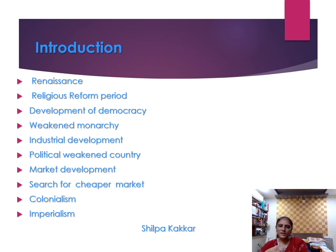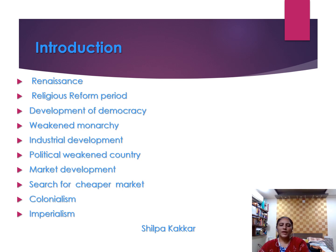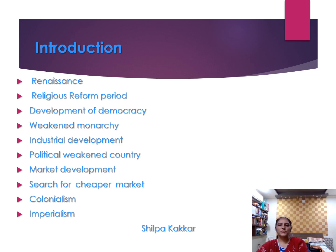Britain needed a market also to sell its finished goods. So the Britishers implemented the economic policy to exploit India and make England more prosperous. Looking at the first 100 years, that is the period between 1757 to 1857 of company rule, it had ruined the well-developed craft industry and prosperous trade of India. India became a poor, miserable and broken country.